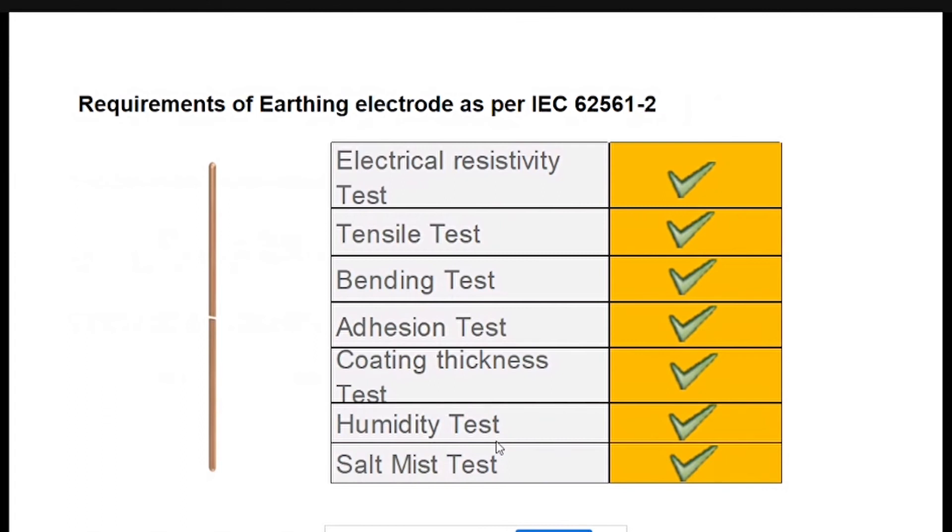The basic requirement of earth electrode is electrical resistivity test, tensile test, vent test, adhesion test, coating thickness test, humidity test, and salt mist test. If the electrode is passing all the tests, then the electrode is safe for using in the environment.